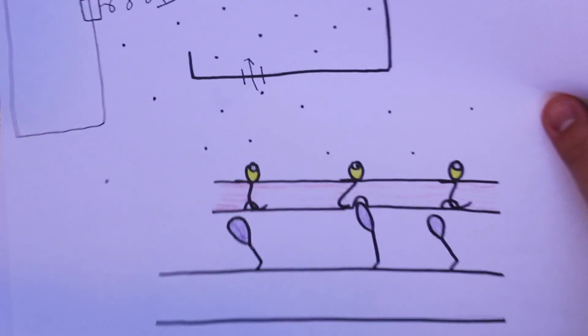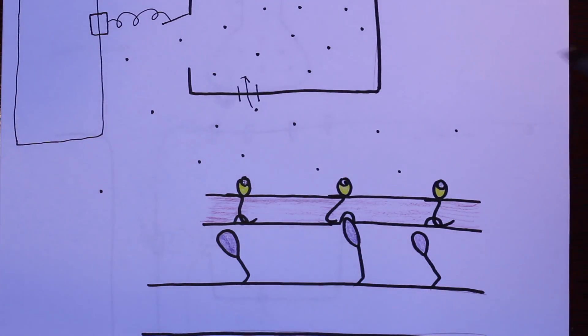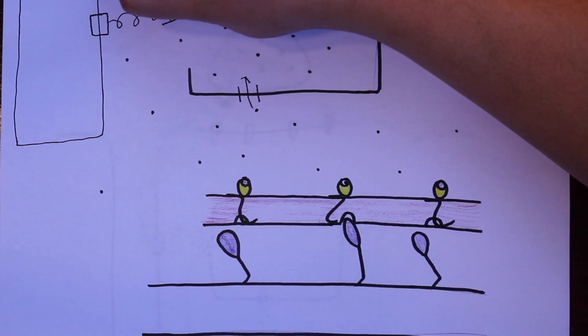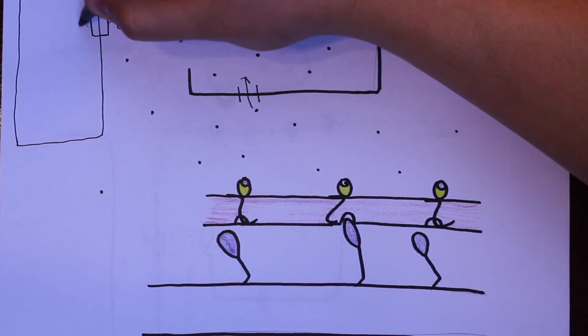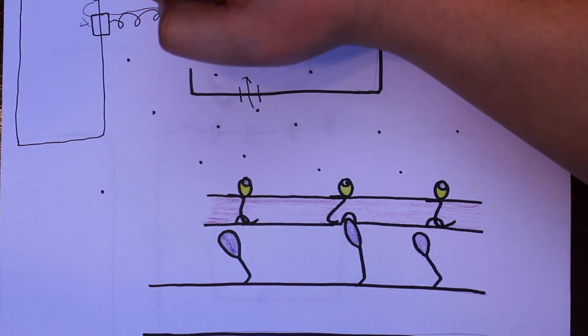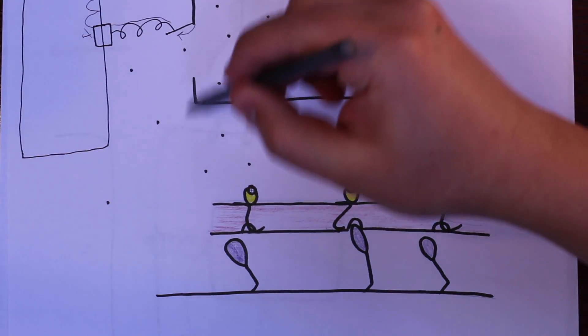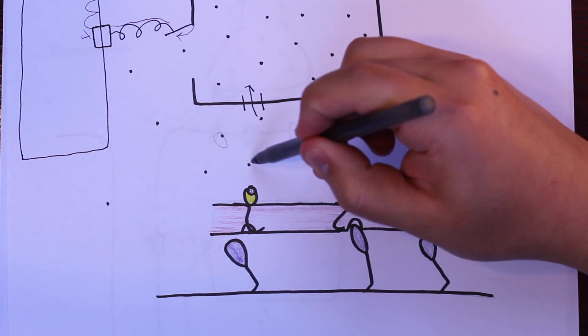Now we want to move on and talk about what calcium does. As we see here, here's our action potential coming down the T-tubule, DHP getting activated, DHP opening the ryanodine receptor physically, and then allowing calcium to flow out into the cytosol.